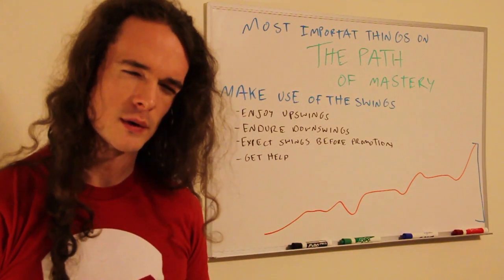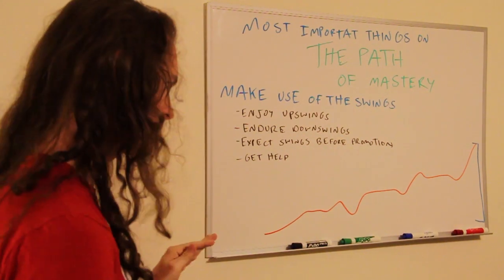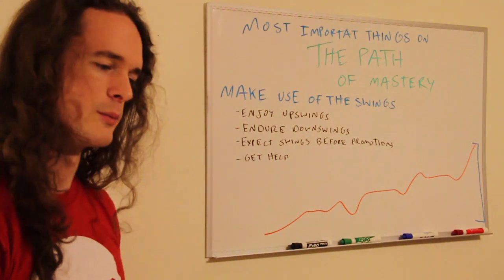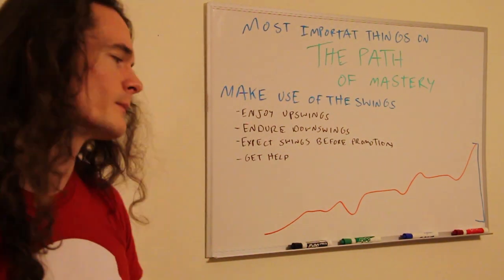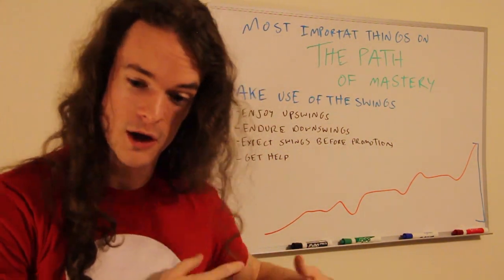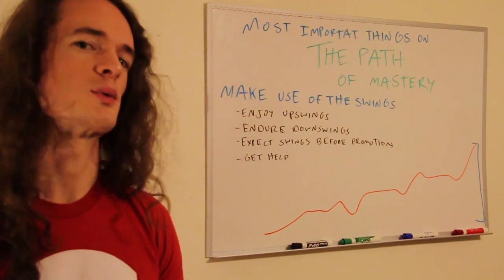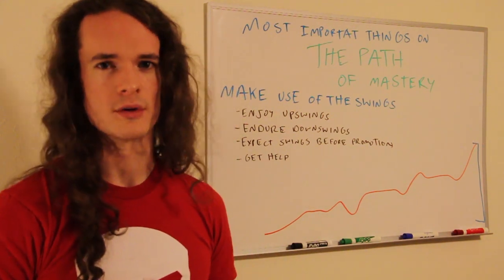When you're improving, progress isn't directly linear. You don't have a simple line of improvement from where you started to where you're ending up. A lot of times, you have a very abrupt upswing. And then the very next day, you could have a sharp downswing. These are just part of progress.